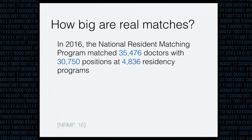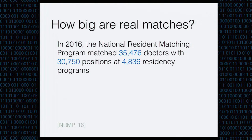Real matches are something like this: in 2016, the National Resident Matching Program matched 35,000 doctors with 30,000 positions at 4,800 hospitals. There are differences between that algorithm and Gale-Shapley, but even accounting for those, we're going to need something like an order of magnitude — possibly multiple orders of magnitude — improvement in order to attempt a match of this size.